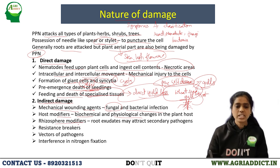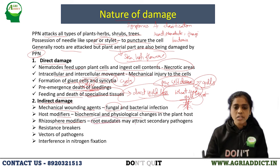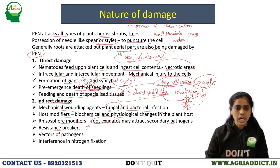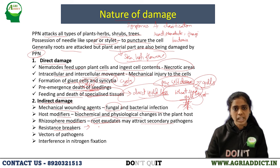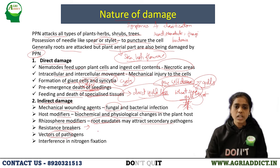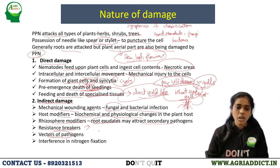Rhizosphere modifiers: nematode-plant infection causes the plant to secrete root exudates which may attract secondary pathogens like bacteria and fungi. Resistance breakers: in certain resistant varieties or cultivars which show resistance to bacteria, fungi, or nematodes, breakdown of resistance takes place due to mechanical injury caused by nematodes. Nematodes also act as vectors of pathogens — some carry bacterial and fungal spores on their body and transfer them from one place to another.